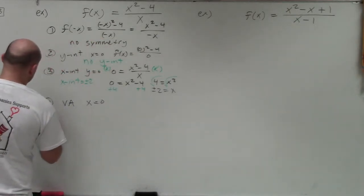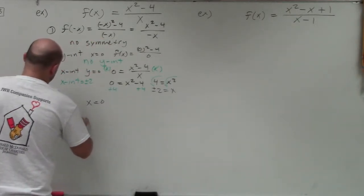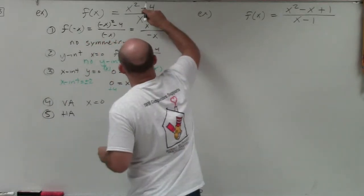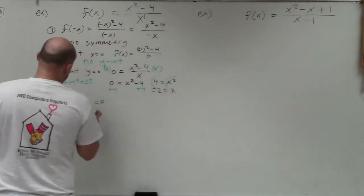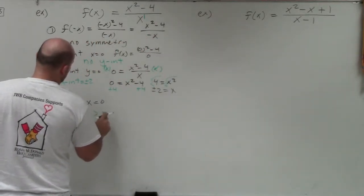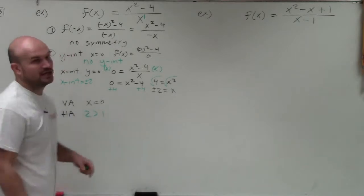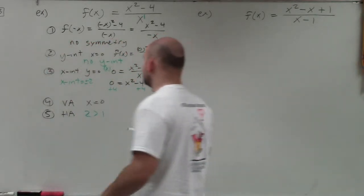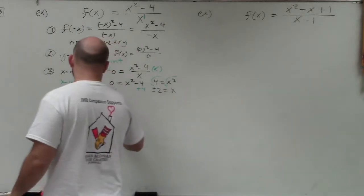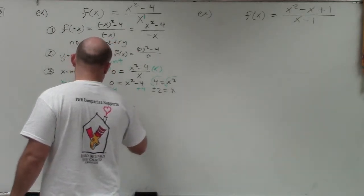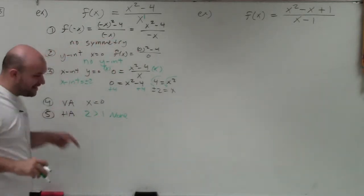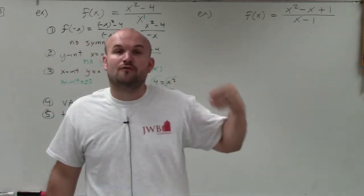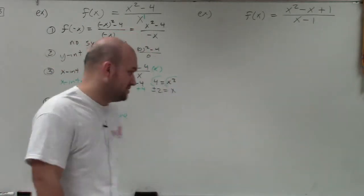Step number 5 is identifying the horizontal asymptote. We want to compare the degrees of the numerator and the denominator. The degree in our numerator is larger than the degree in our denominator. When that's the case, we do not have a horizontal asymptote — that is none. However, if we do not have a horizontal asymptote, we have to check for a slant or oblique asymptote.